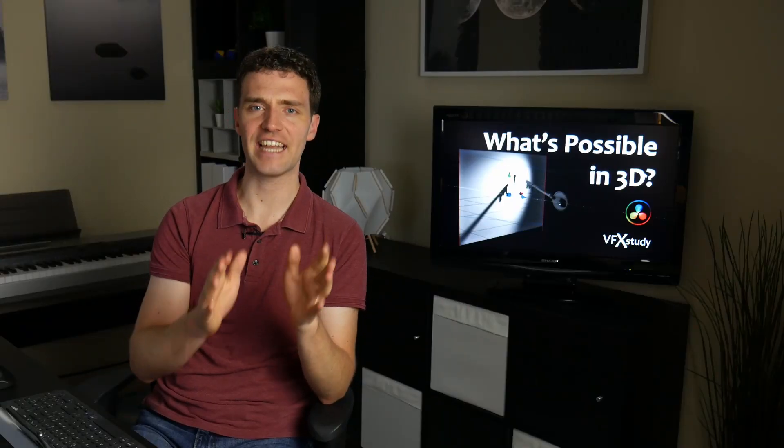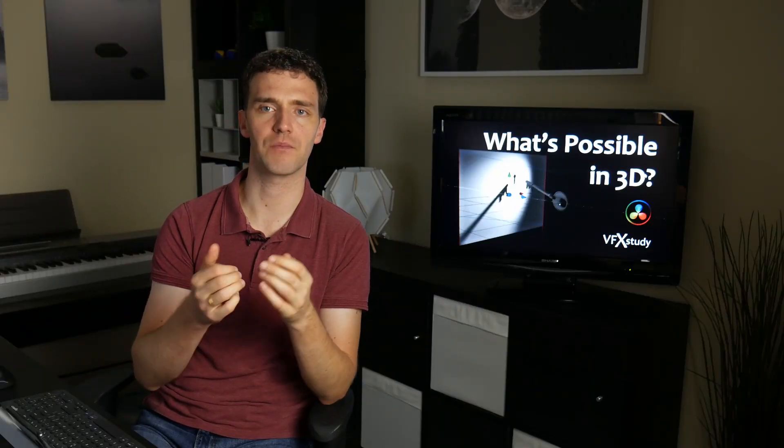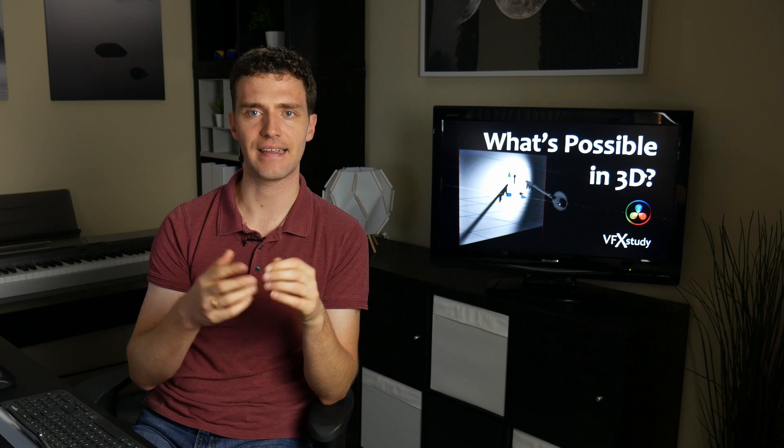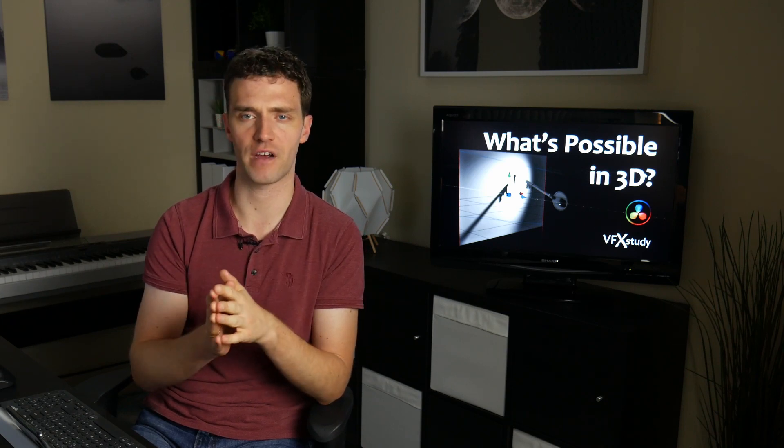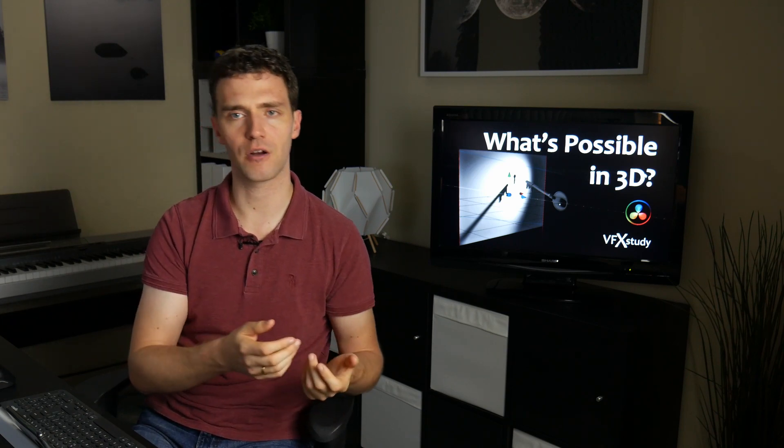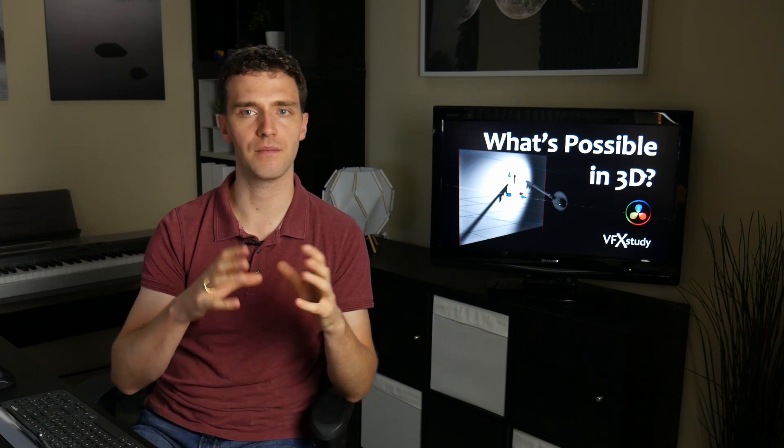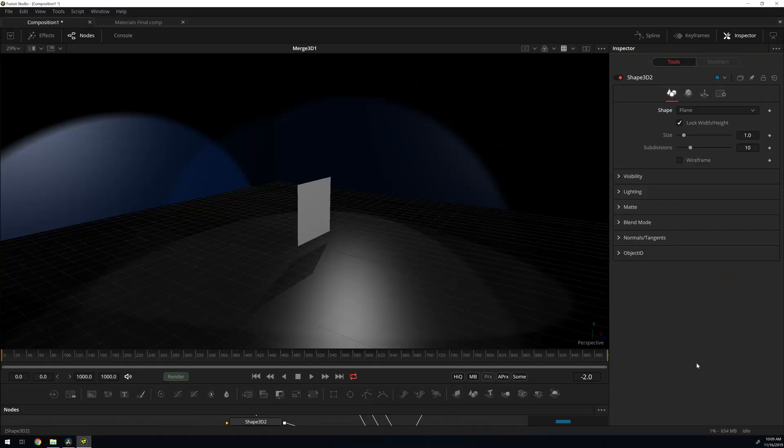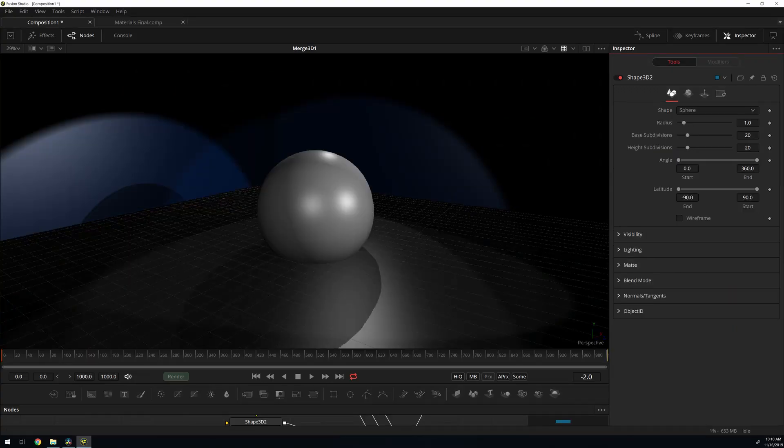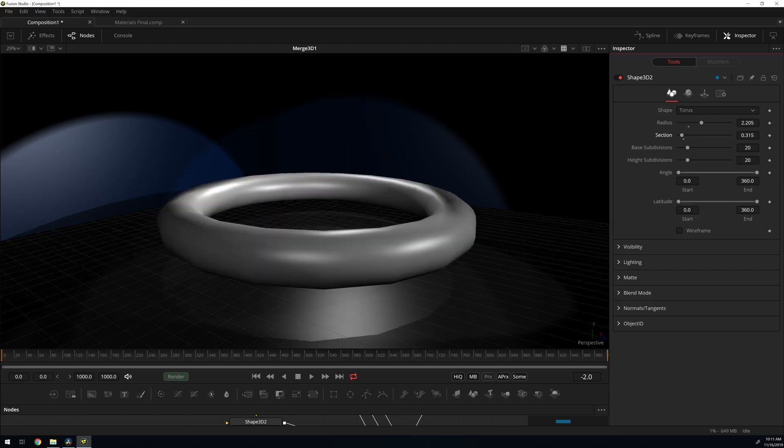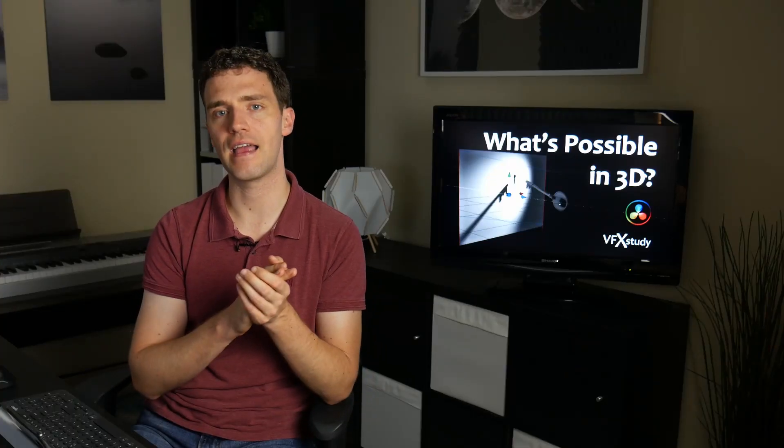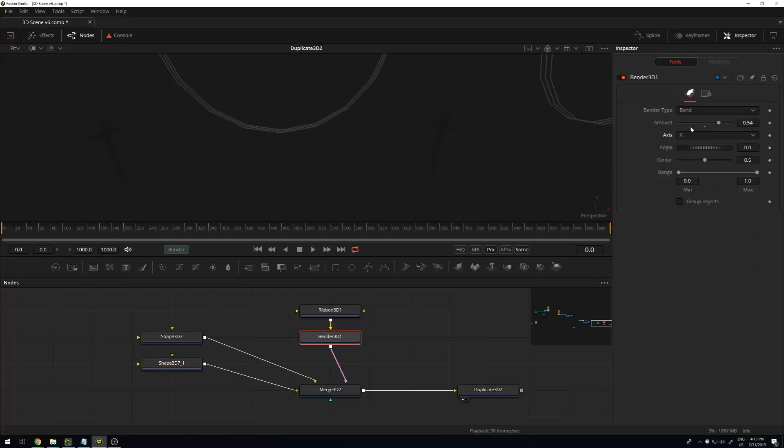So how much can you actually do in Fusion when it comes to modeling, lighting, and rendering? And what should you not try in Fusion? First of all, let's talk about geometry. When I'm creating geometry in Fusion, I have simple geometric objects which I can create and combine and modify. So I have my cubes and spheres and cylinders and pyramids and that kind of stuff.